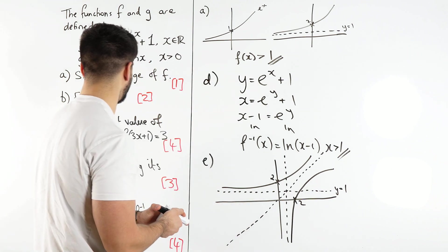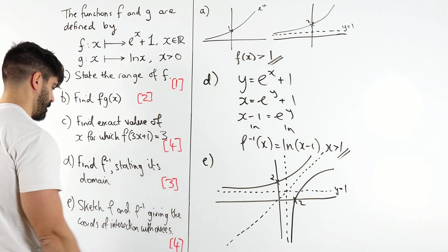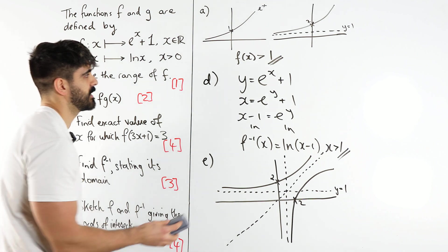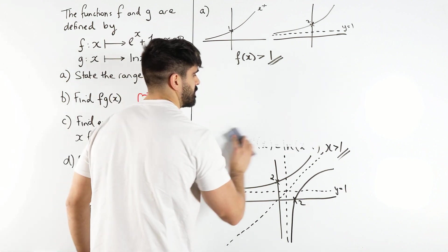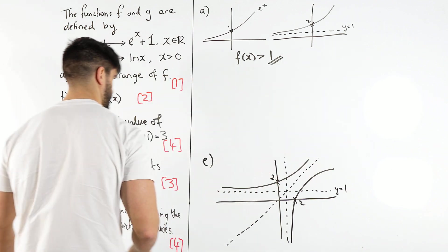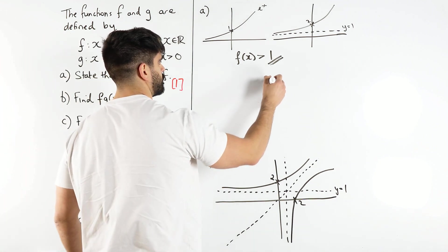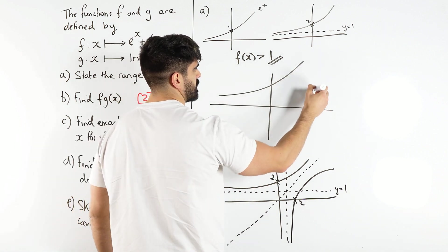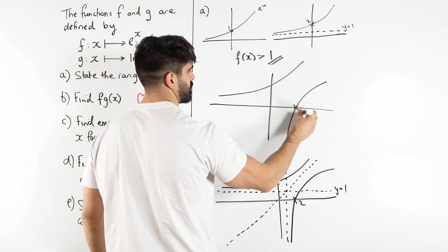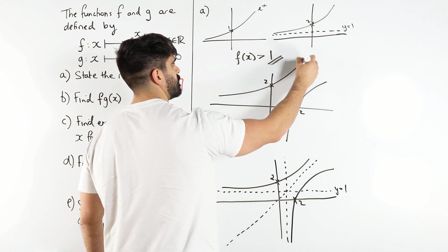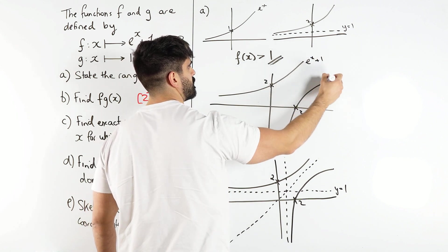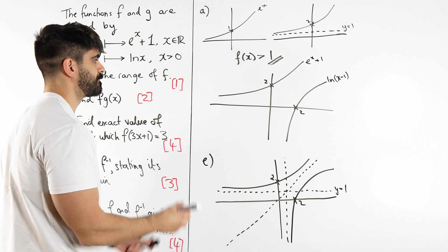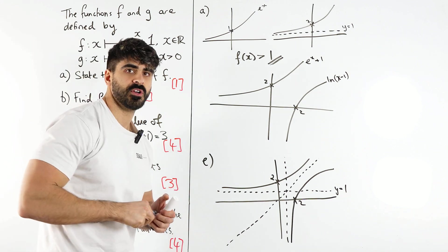Now the question did want us to sketch f and the inverse, given the coordinates of the intersection with the axes, which we've basically done. So let's do our clean solution now. So our clean solution is that one's doing this and one's doing this. This is 2, this is 2, this is e^x + 1, and this is ln(x - 1). And that's pretty easy for 4 marks.